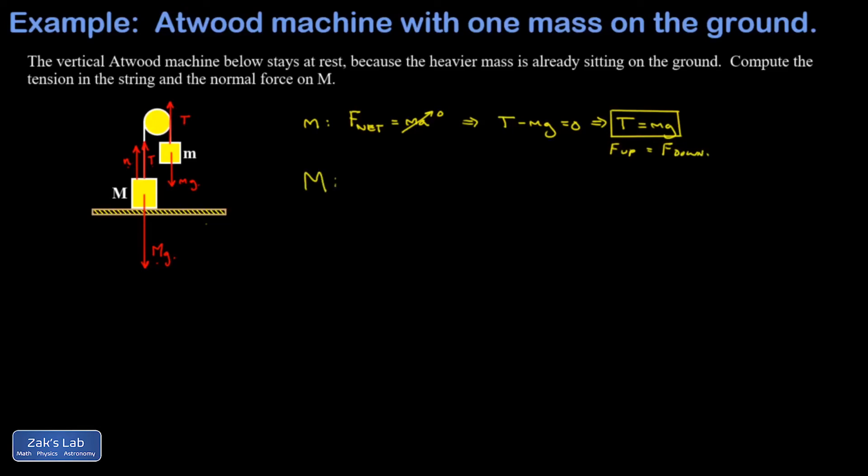All right, what about big M? Again, just to be a little more formal about it, I write down F net equals ma, but there's no acceleration so the right hand side is zero there. And my upward forces are N